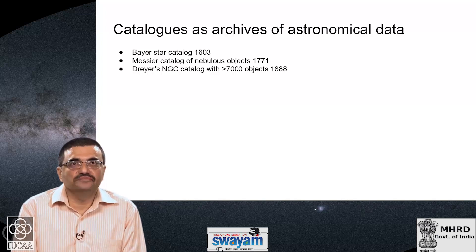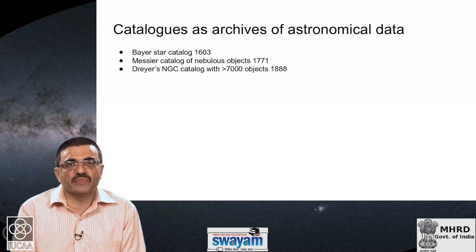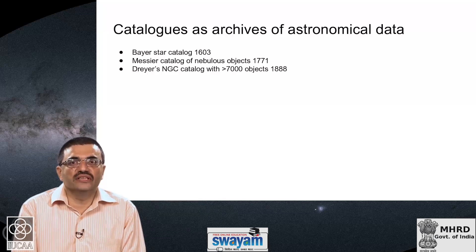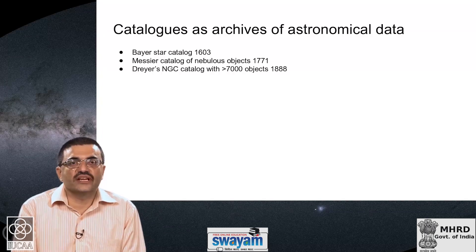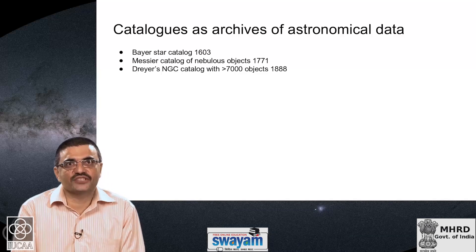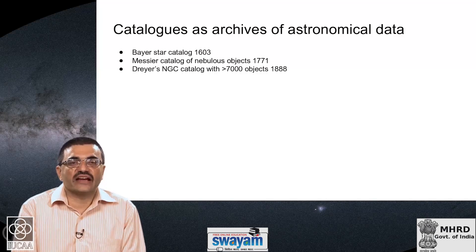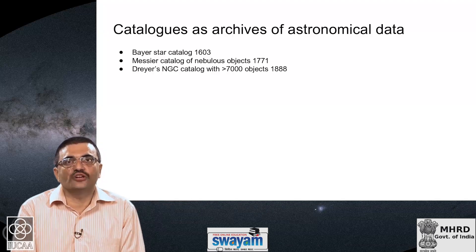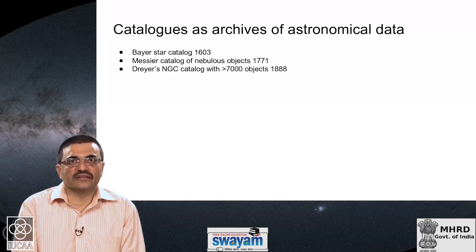In 1603, Bayer compiled his star catalog and for the first time thought of labeling every star in a constellation by its brightness. He partitioned the entire sky into several constellations and in each constellation labeled the brightest star as alpha, the second brightest as beta, the third as gamma, and so on. He constructed the first star atlas and accompanying catalog that tried to classify stars as per their apparent brightness.